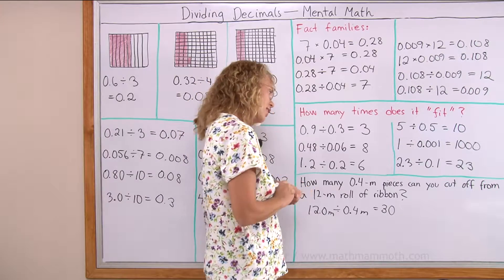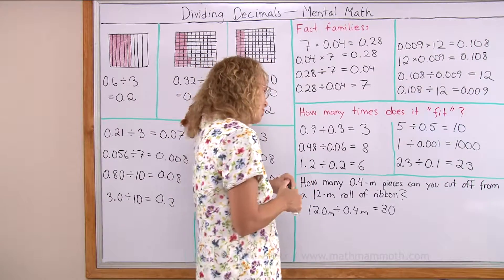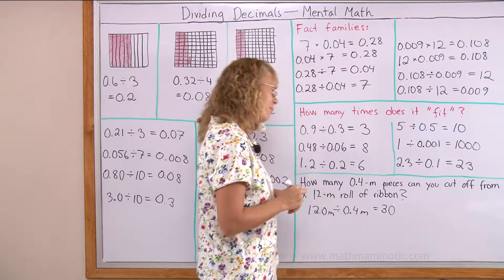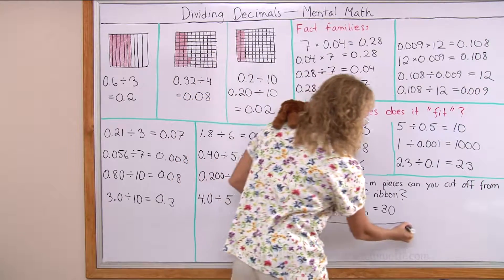What's that, Mati? Mati has another way to solve this problem. Well, tell me real quick. Think of 2 meters. Another way to solve this might be easier. Change it to something easier. How many 0.4 meter pieces can you cut off 2 meters of ribbon?